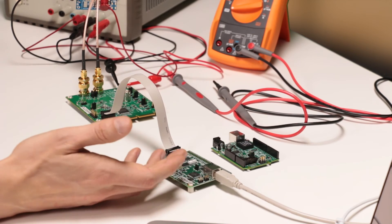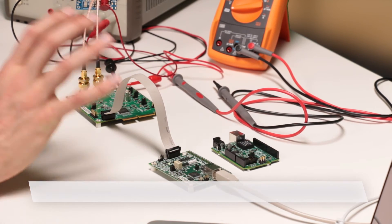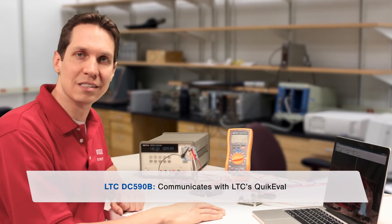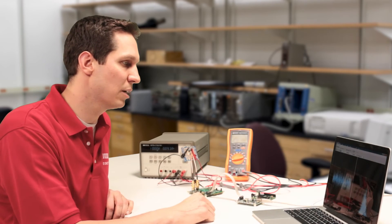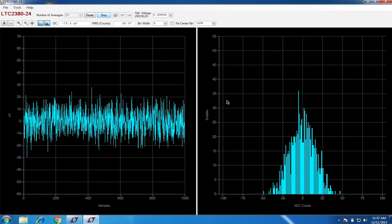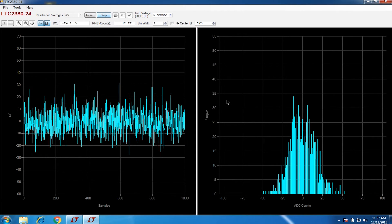Which then goes to the communications board. It's a new communications board for DC measurements and that's the DC 590, which then communicates with LTC's quick eval here on the laptop. So as we look here on the laptop, we can see that the DC RMS noise is actually about 75 micro volts. So it's very, very low and it shows how quiet and how precise this ADC can get.